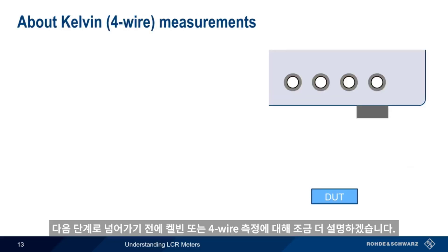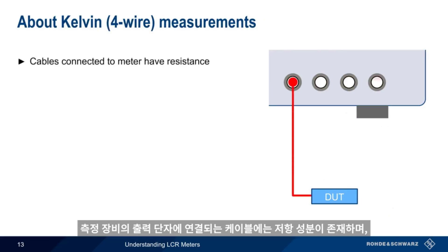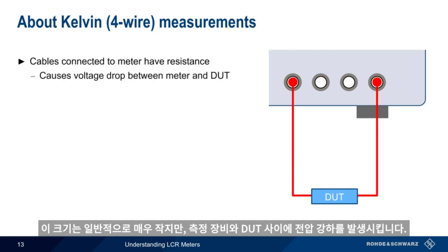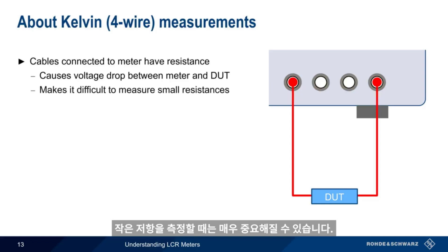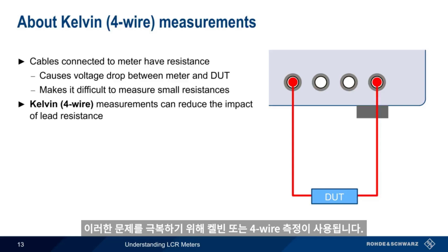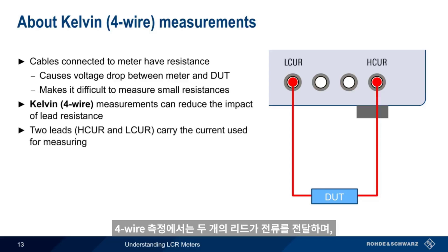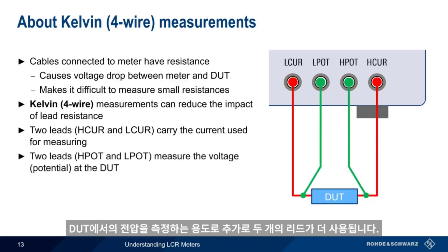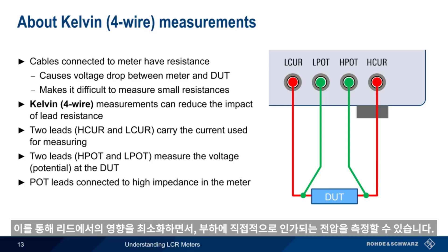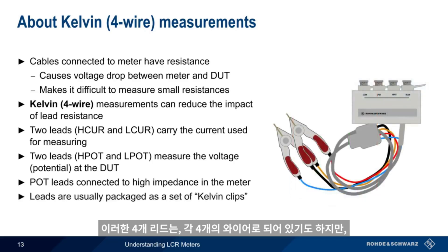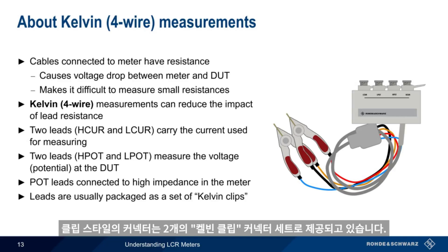Let's discuss Kelvin or four-wire measurements. The cables connected to the meter have resistance, and although this resistance is typically very small, it does cause a voltage drop between the meter and the device under test. In a four-wire measurement, two leads carry the current, but two additional leads measure the potential or voltage at the device under test. These leads are connected to a very high impedance, so there's almost no current flow and therefore almost no voltage drop. This allows the meter to measure voltage almost directly at the load, with minimal impact from the test leads. In most cases, these four leads are packaged as a set of Kelvin clip connectors with four wires but only two clip-on-style connectors.